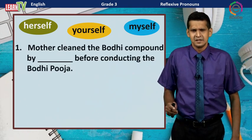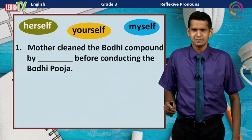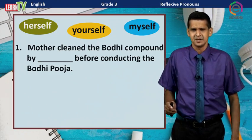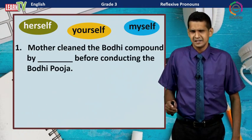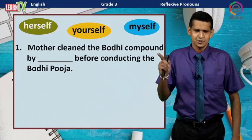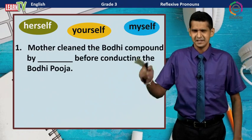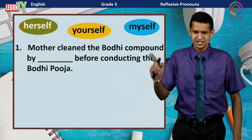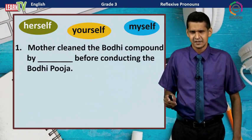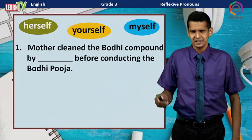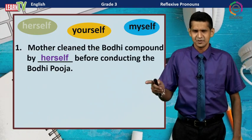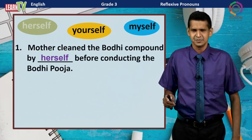The first one: Mother cleaned the bodhi compound by ___ before conducting the bodhi puja. Mother is a female person, so the subject pronoun is 'she.' Therefore the reflexive pronoun should be 'herself.' Mother cleaned the bodhi compound by herself before conducting the bodhi puja.